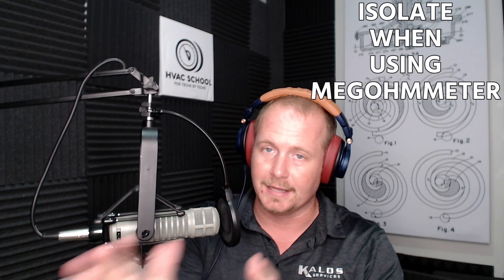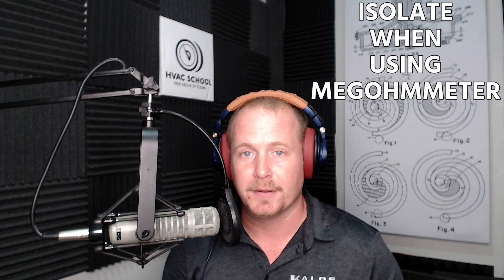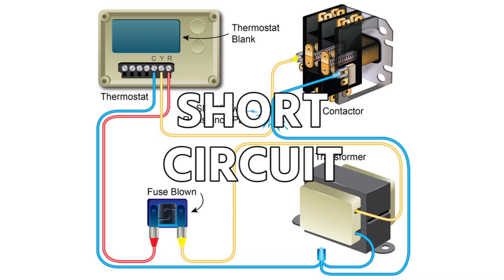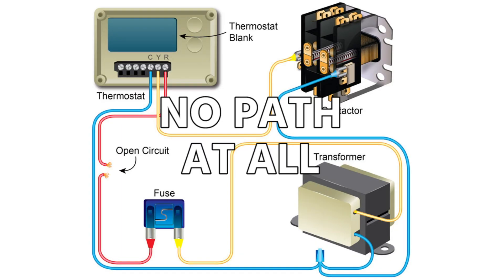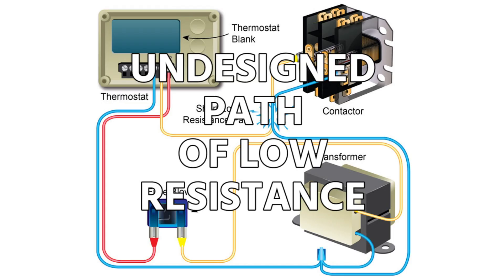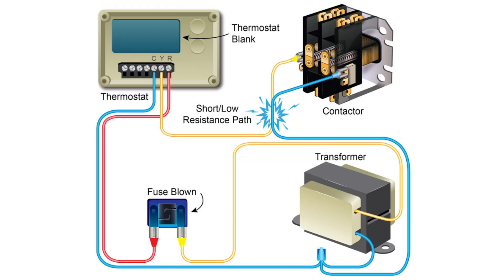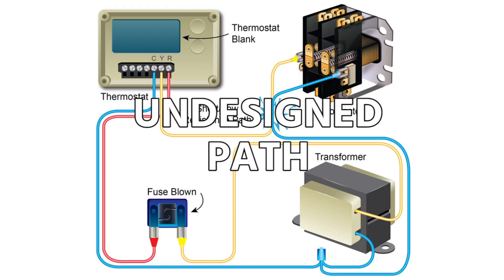You have to make sure that you're isolating when you're using a megohm meter. All that's doing differently than your regular multimeter on the ohm scale is increasing that voltage, which is going to help you find problems a little bit more accurately. The main thing I wanted to talk about here today is the difference between a short circuit — which is an undesigned path of low resistance — and an open circuit — which is no path at all. Open circuit: no path at all. Short circuit: undesigned path of low resistance. And maybe you can even just say an undesigned path in general.